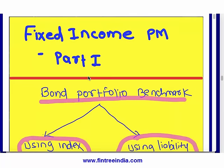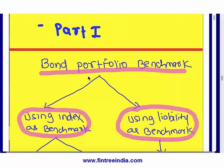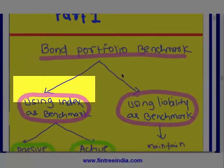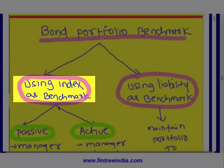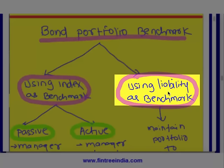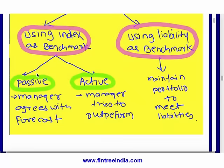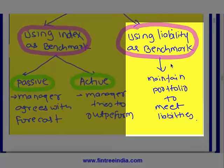In fixed income portfolio management part one, the first learning outcome covered benchmarks. You can have either an index as a benchmark or a liability as a benchmark. If you use an index, you can follow either a passive strategy or an active strategy. In a passive strategy, the manager agrees with the forecast, while an active manager will try to outperform using the benchmark.